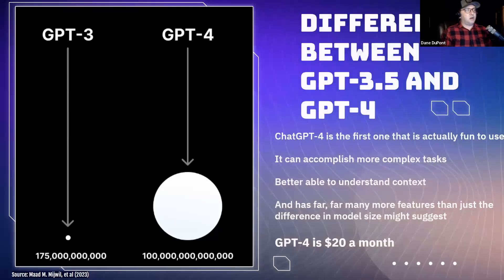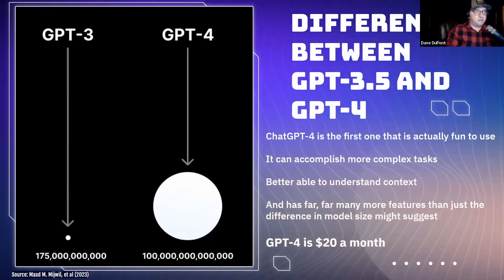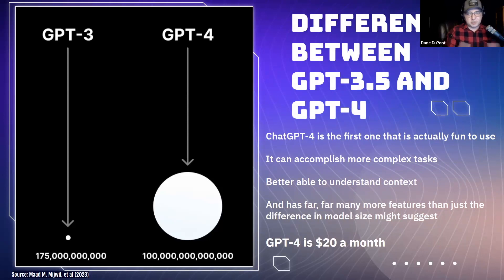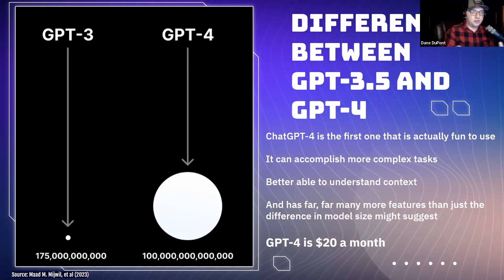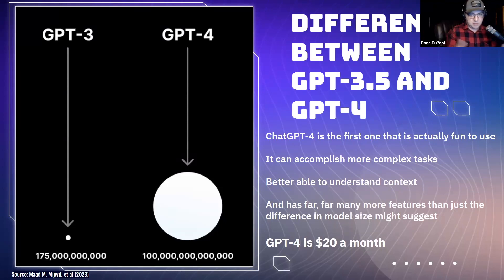Not all large language models are the same, and not all GPT models are the same. GPT is not a trademark name — it stands for generative pre-trained transformers, and it's a model type that's not proprietary. Anybody can use it. So you'll see things advertised as GPT that may or may not actually be GPT — it's a free-for-all in that regard. But ChatGPT-4 is proprietary; that's the OpenAI model and the one the real hype is about.